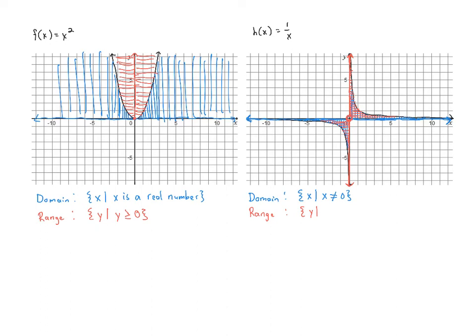So in this case, the range is the set of numbers y such that y does not equal zero. This one is fairly unique. This function is a little bit different than the other ones we've seen. It's the only one we've had so far where it wasn't all real numbers or greater than or equal to zero. So this is just an example of how things can be a little bit different.